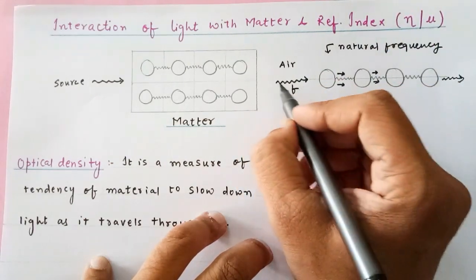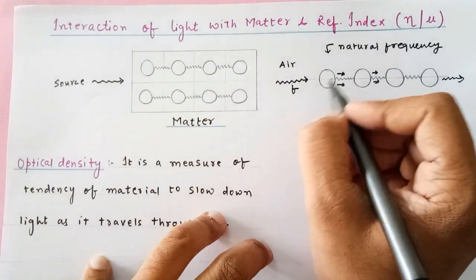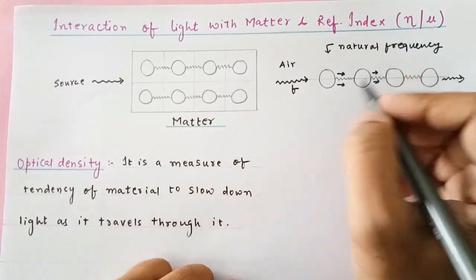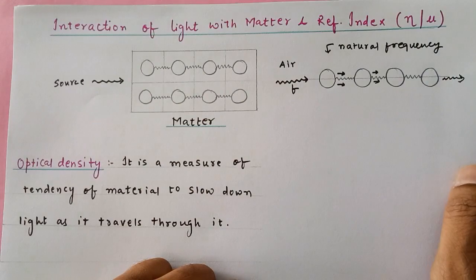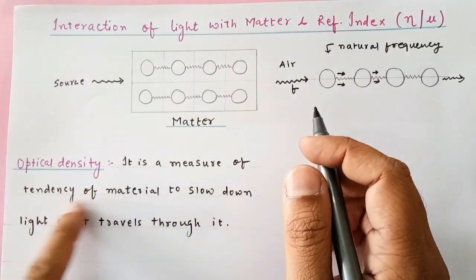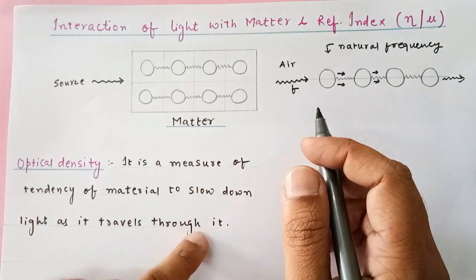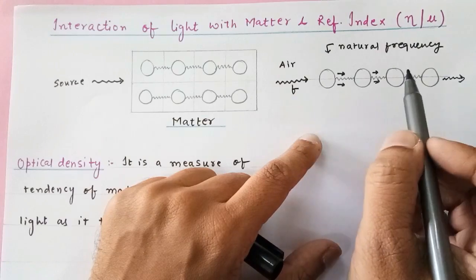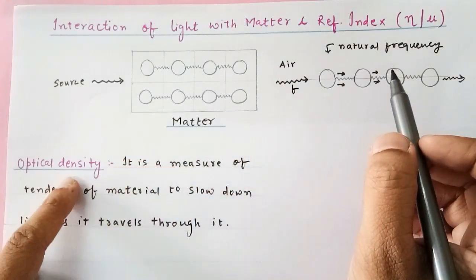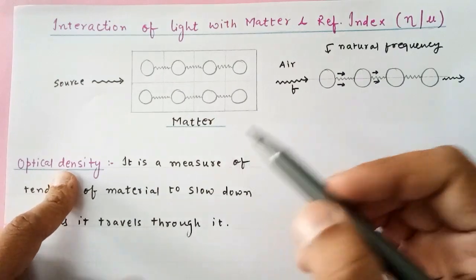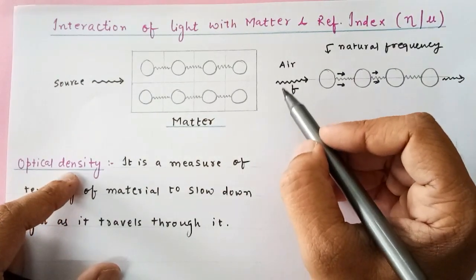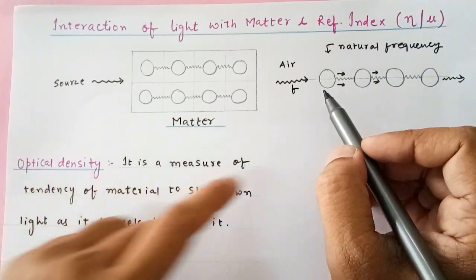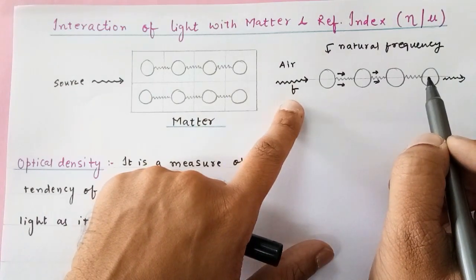When frequencies do not match, the light will be absorbed by the atoms for a very short time and again re-emitted quickly. On the basis of this, we define a property called optical density — it is a measure of the tendency of a material to slow down the light as it travels through it. If the material has more optical density, there are more chances of the frequency of light matching with the natural frequency of the atoms.